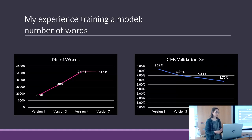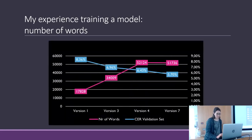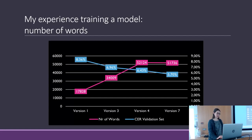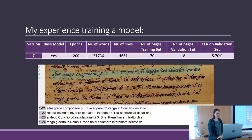In version 4, we have 52,000 words and a CER of 6.43%. In version 7, we have a lower number of words but the CER decreases to 5.70%. Between versions 4 and 7, I proofread the transcriptions and layout analysis.